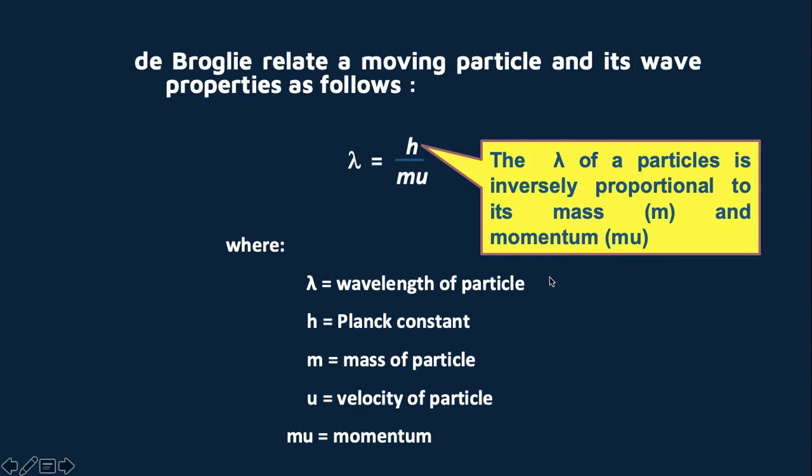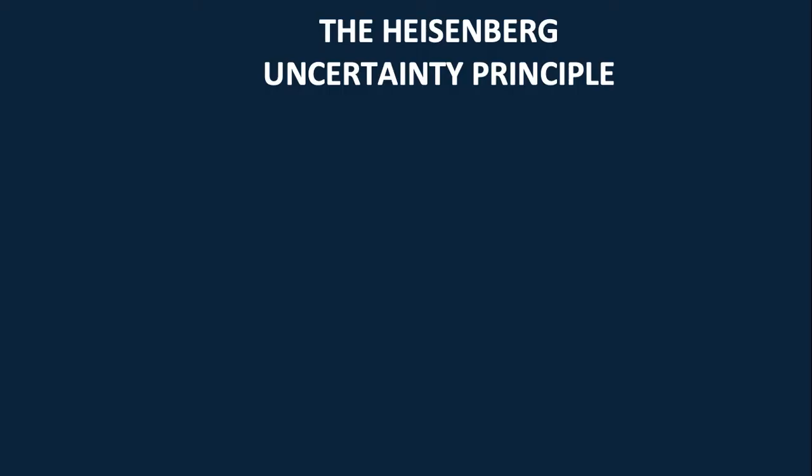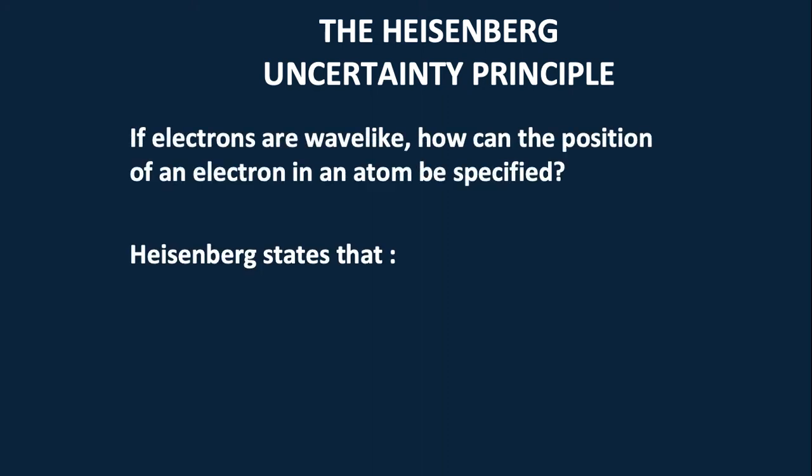If an electron has the properties of both particle and wave, what can be determined about its position in the atom? Here comes the Heisenberg uncertainty principle. If electrons are wave-like, how can the position of an electron in an atom can be specified?